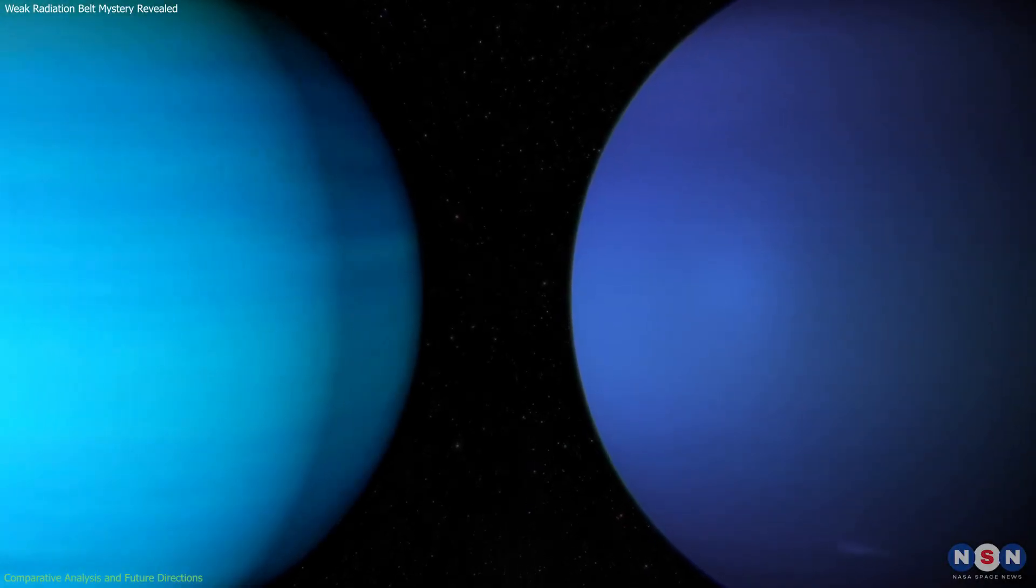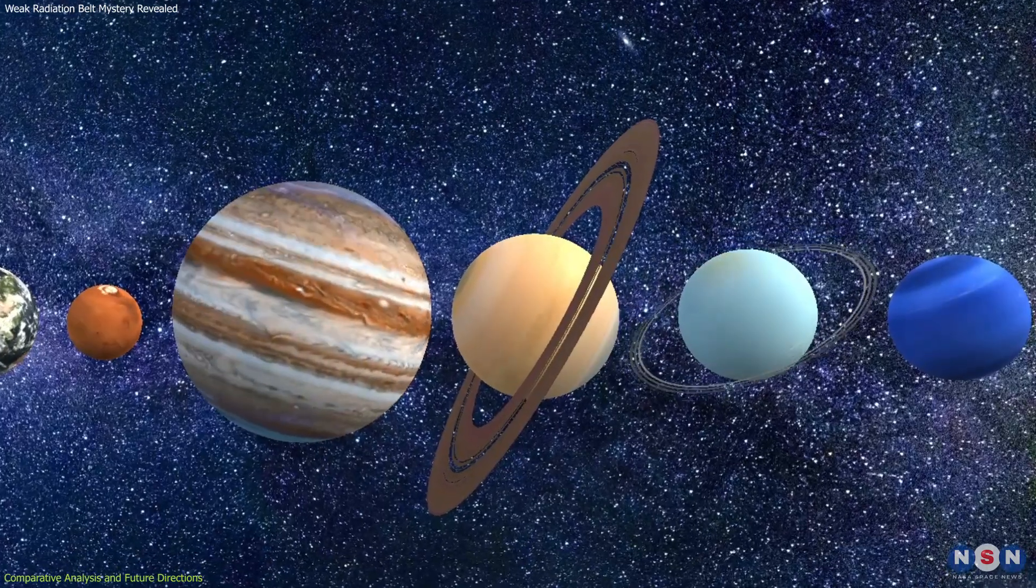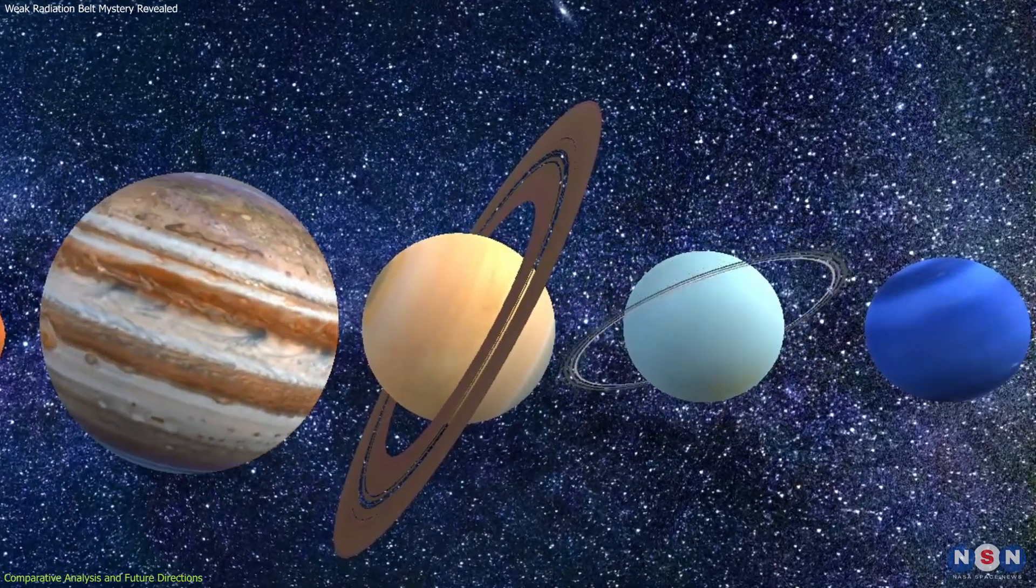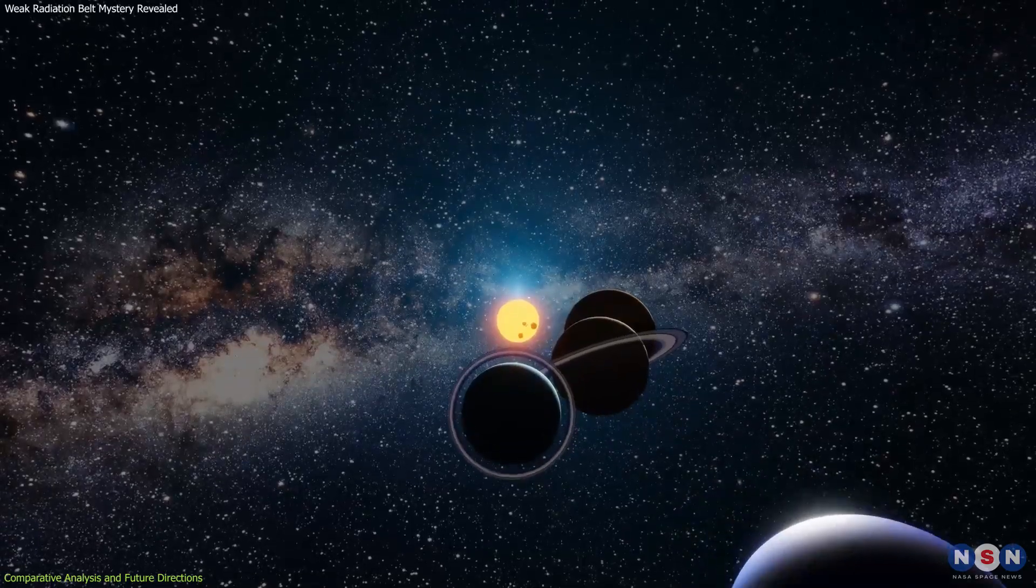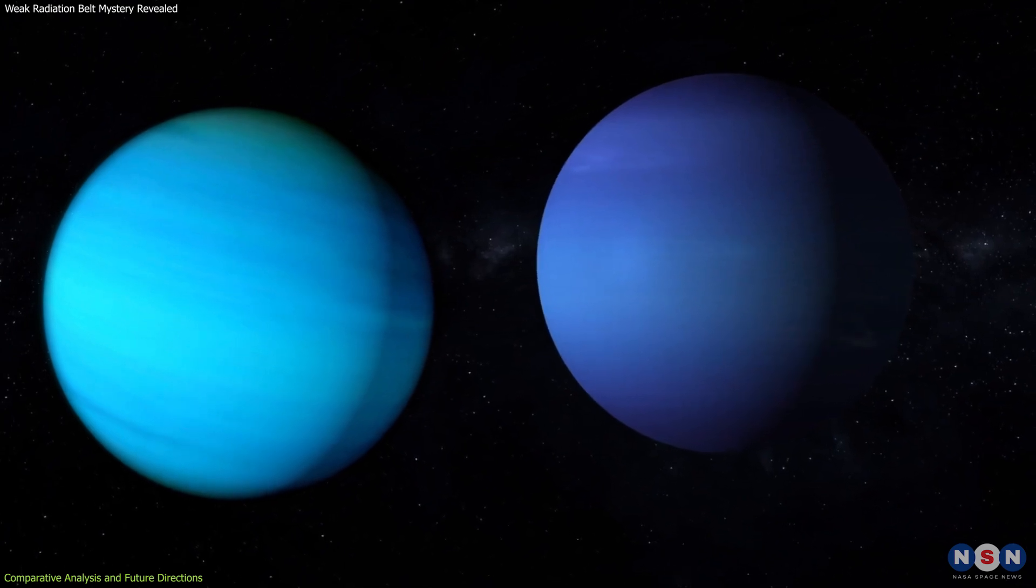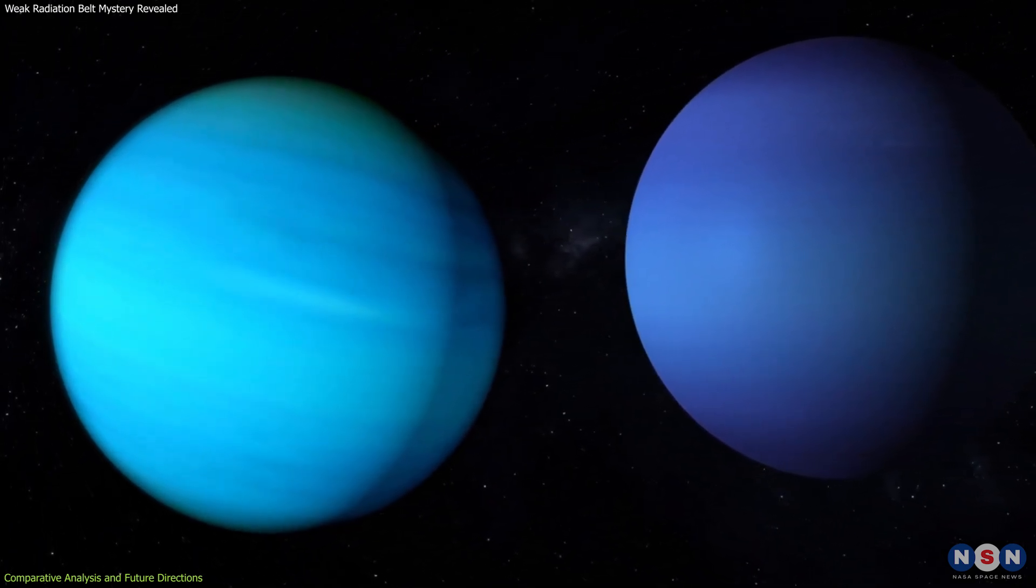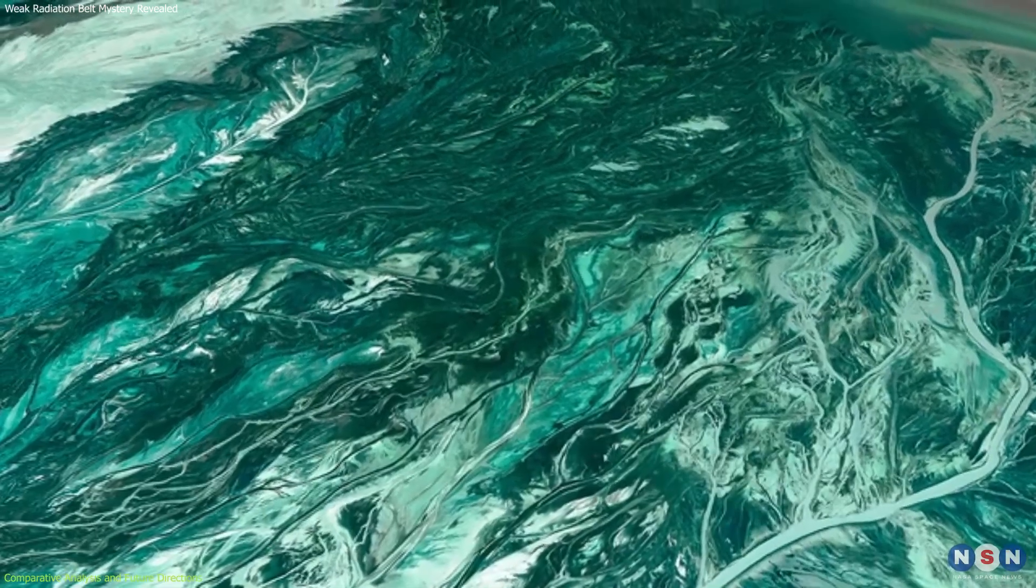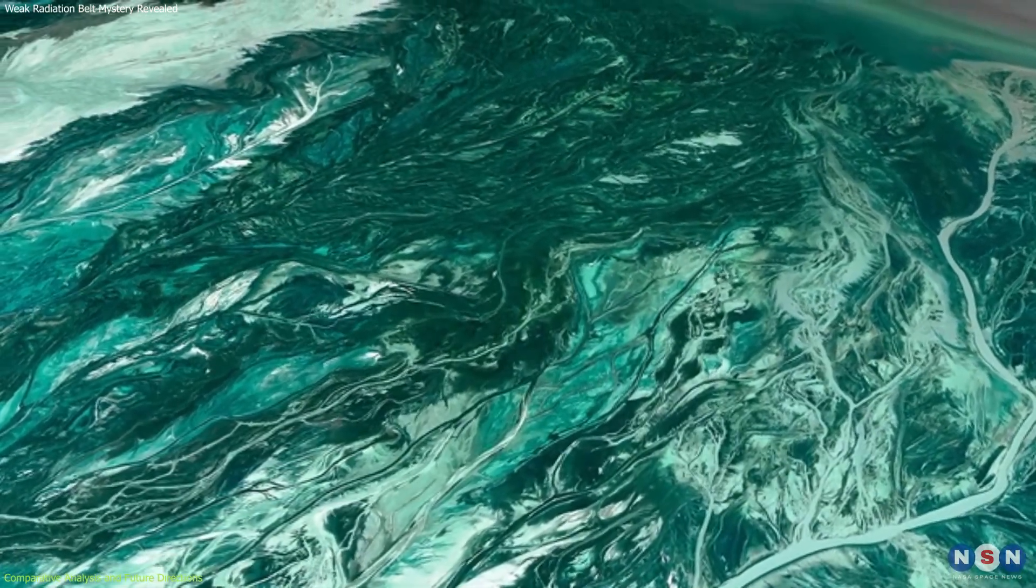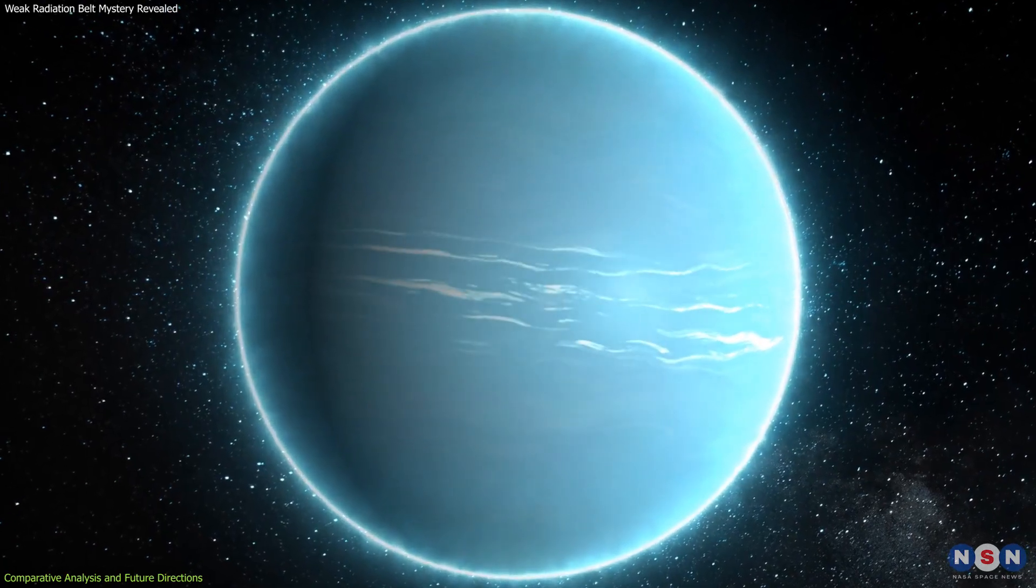Engaging in comparative planetology, particularly with Neptune, Uranus' near-twin in size and composition illuminates the diversity of magnetic environments across our solar system. Although both ice giants exhibit unique magnetic fields, the comparison raises intriguing questions. For instance, why is Uranus significantly colder than Neptune despite being closer to the Sun? Or why does it exhibit a pale green color?